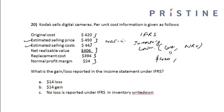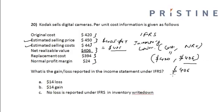The net realizable value is $406. The minimum value is $406. Since the cost ($420) is greater than the net realizable value ($406), a loss of $14 is reported in the income statement under IFRS.